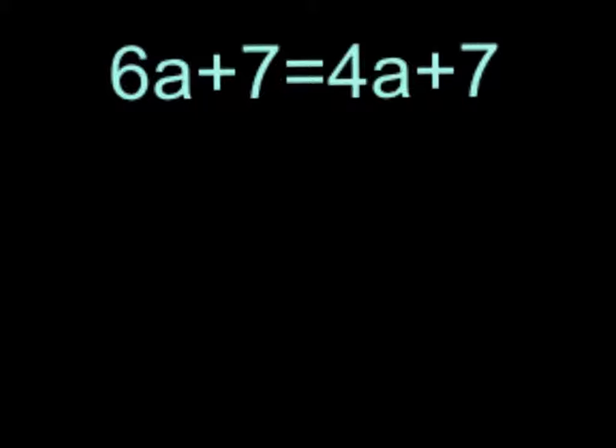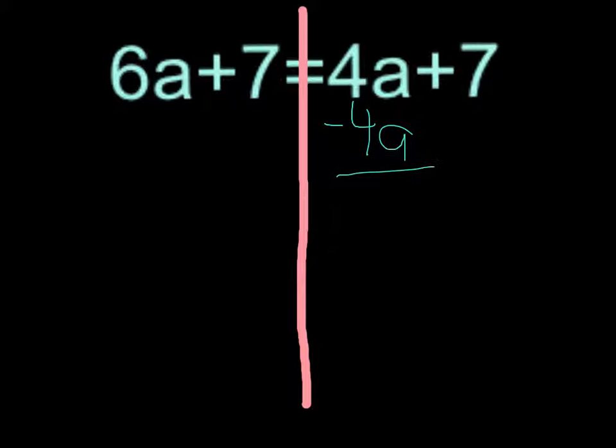Now you want to find out what a equals. This is a scale, you want to keep the sides even. So here's the line of the scale, you want to keep equal. Now you don't want a on both sides of the equal sign. So you want to subtract the smallest number from the larger number. So minus 4a equals 0. And minus 4a equals 2a.